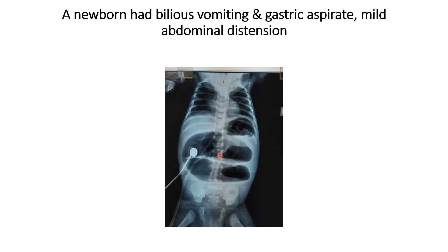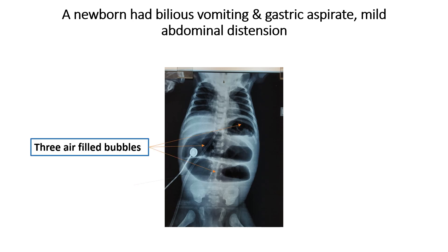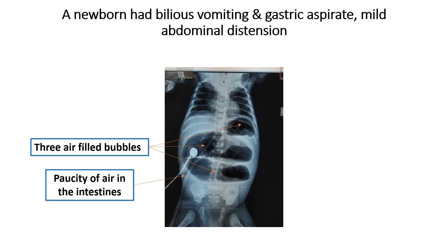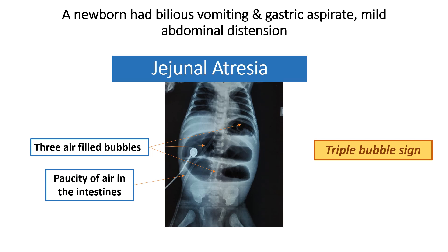This is the X-ray of a newborn who had bilious vomiting and gastric aspirate and mild abdominal distension. In this X-ray, you can see there are three air-filled bubbles visible: the first is the stomach, the second is the duodenum, and the third is the jejunal part. In the other part of the abdomen, there is no bowel gas visible, meaning there is complete obstruction beyond this point. The abnormal radiological finding is the triple bubble sign, and the diagnosis is jejunal atresia.